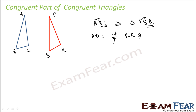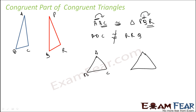BC side is equal to QR side, and AC side is equal to PR side. When given that triangle ABC is congruent to triangle PQR, you can directly infer the side correspondences. We label the vertices: A, B, C correspond to P, Q, R respectively, in the same order — first, second, third. Side AB equals PQ, BC equals QR, and AC equals PR.